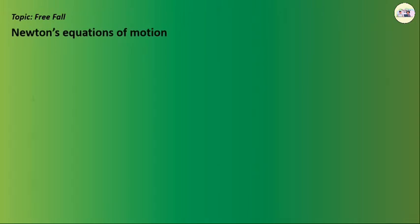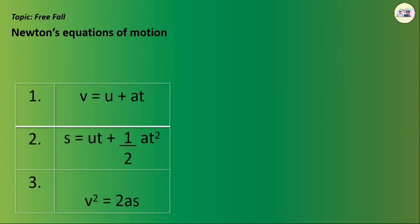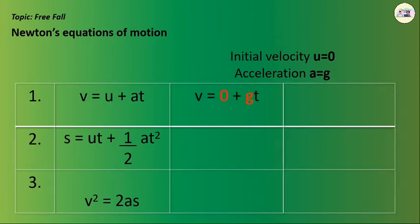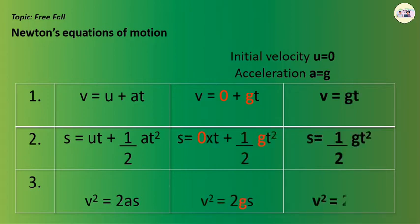The velocity of a free falling object can be calculated using Newton's equations of motion. Initial velocity u equals zero and acceleration a equals g. Thus, we can write the equations as v = gt, s = ½gt², and v² = 2gs.